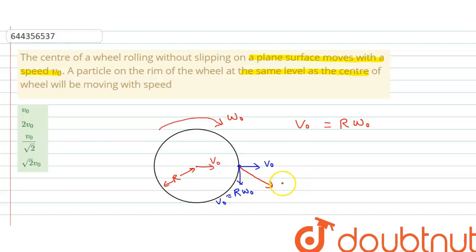So, net resultant will be equals to root 2 v0. Root 2 v0 is the net speed of this particle. So, correct option is option D. I hope you have understood this explanation.